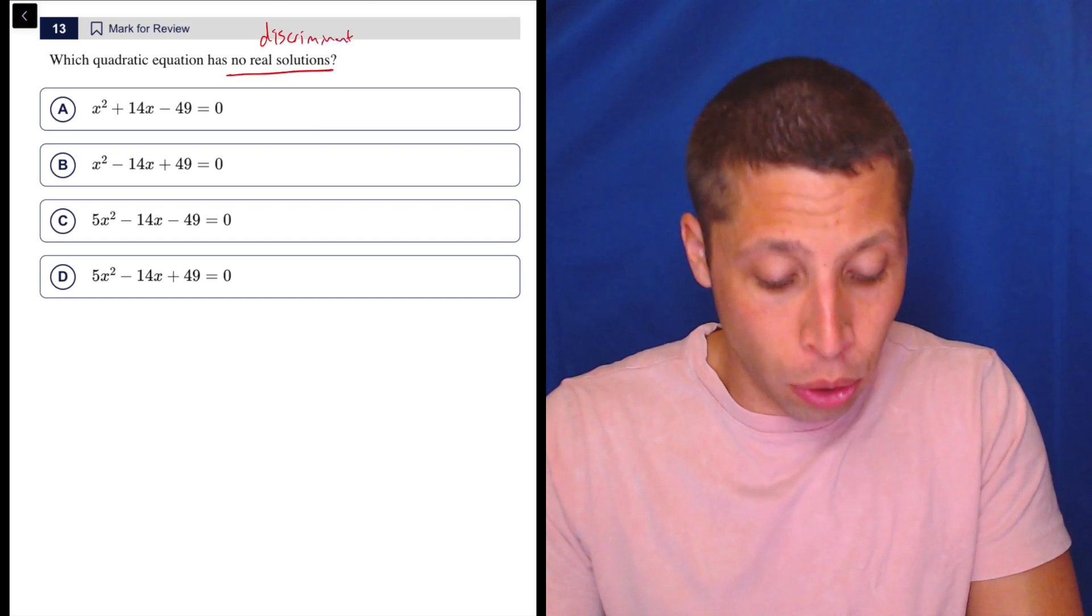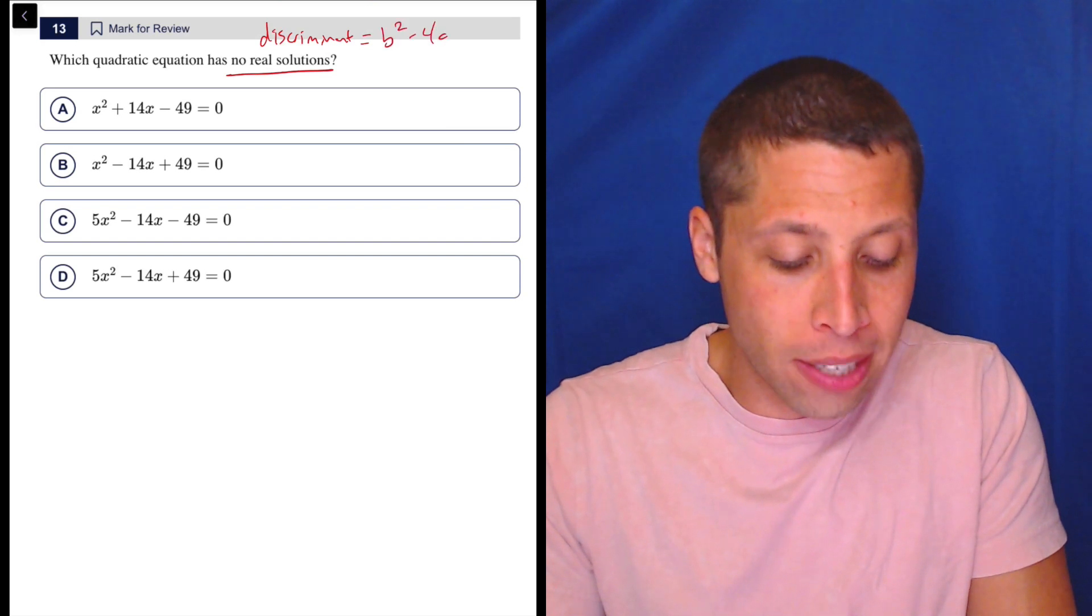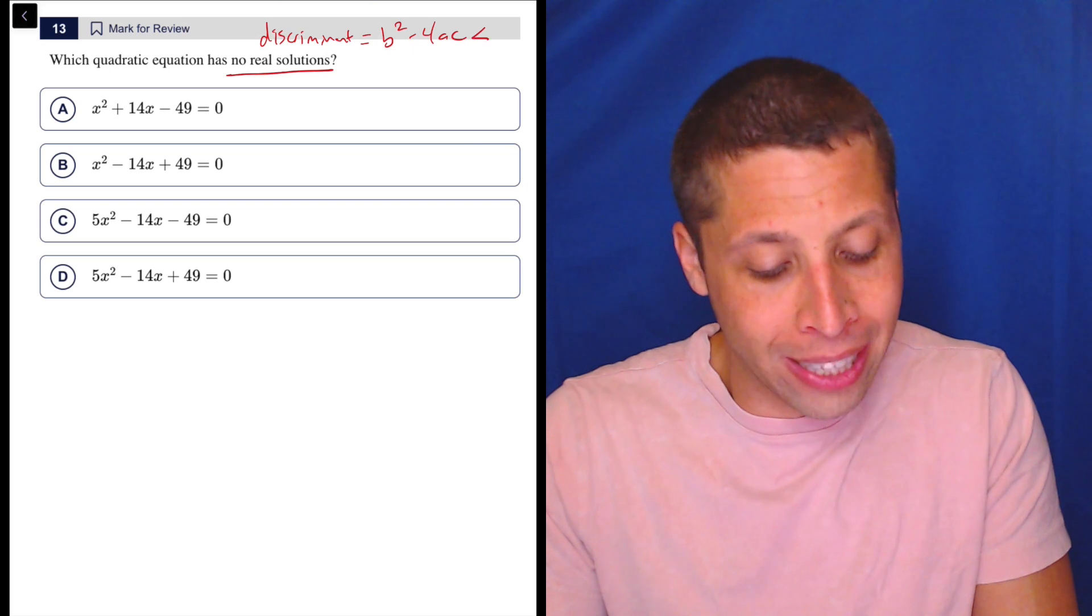If you're really comfortable with it, you could. We would need to remember that that is b squared minus 4ac, and if we have no real solutions, then b squared minus 4ac has to be less than zero.